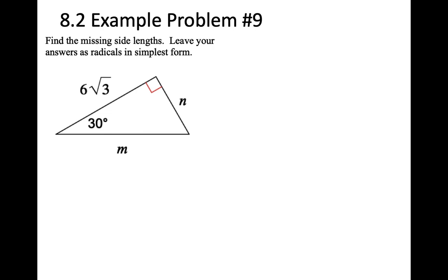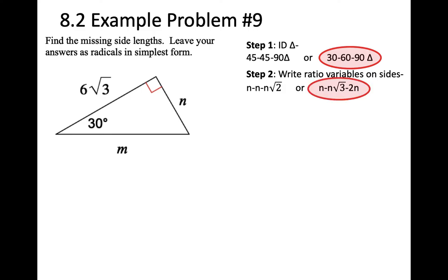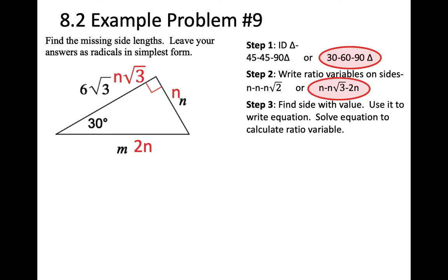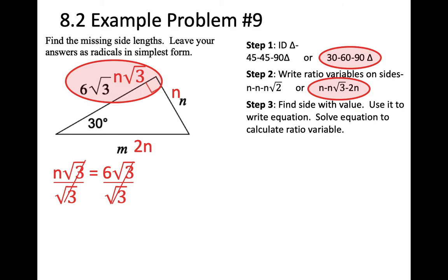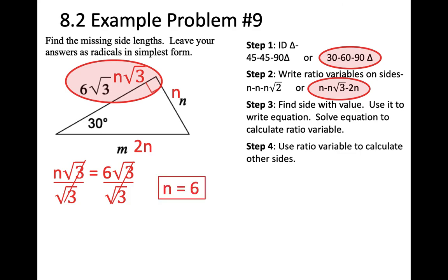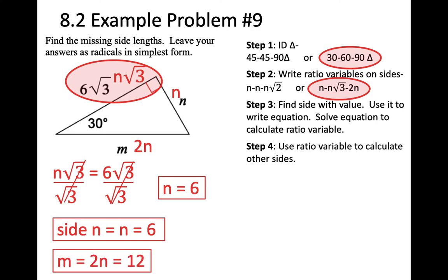Problem 9: it's a 30-60-90 with ratios N, N root 3, 2N. Find the side with a value, write the equation, and solve — N equals 6. Side N equals N, so that's 6. Side M equals 2N, so that's 12.